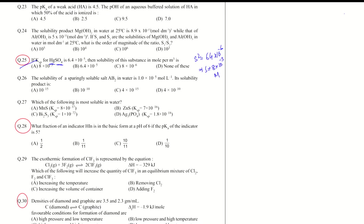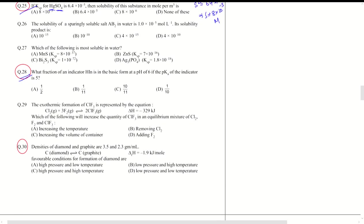Next is question 28, in which we have an indicator HIN. You directly have the indicator equation, which is that pH equals pK of the indicator plus log of IN minus by HIN concentrations or number of moles. IN minus in this case is the basic form which is asked in the question.